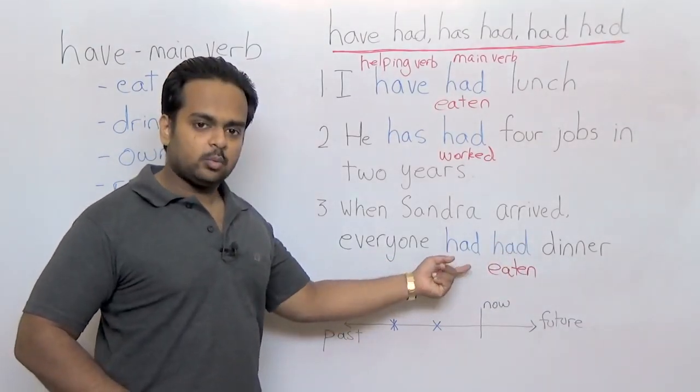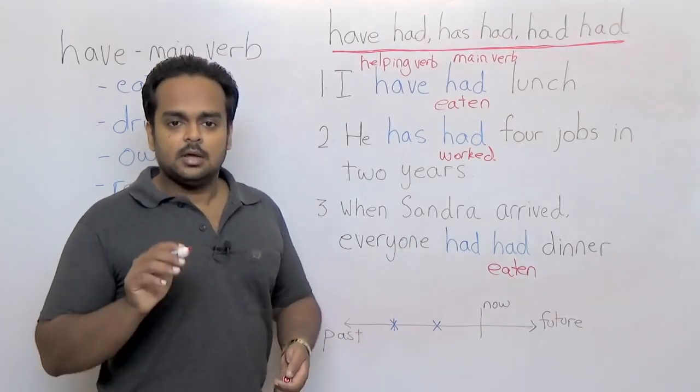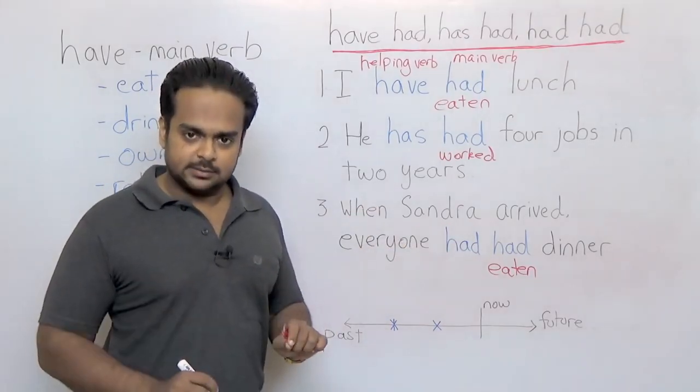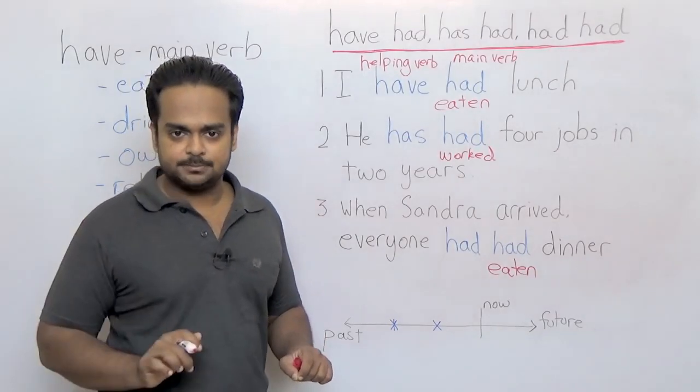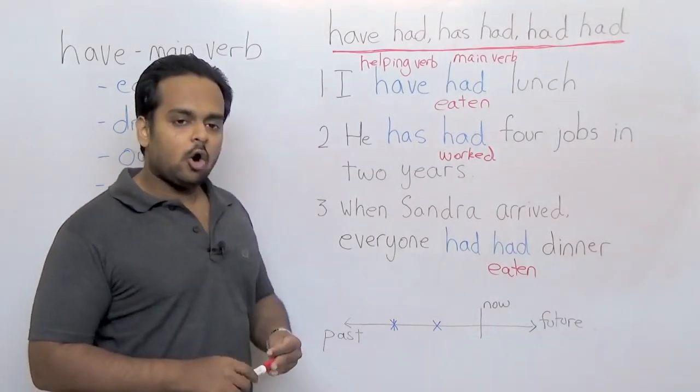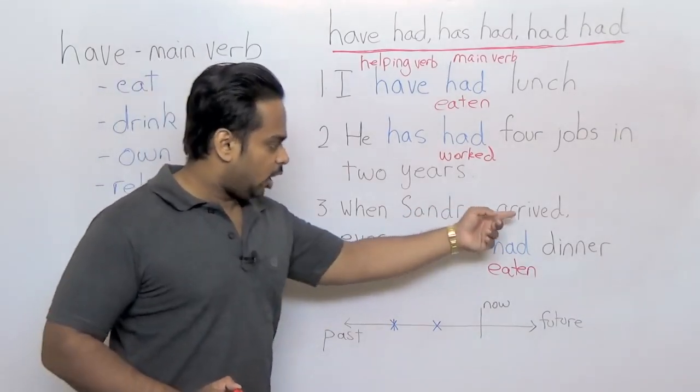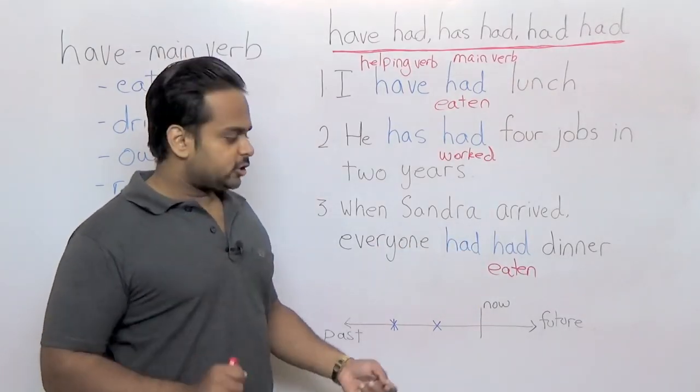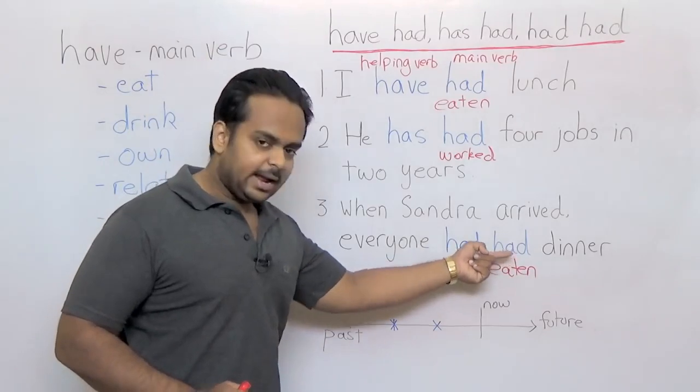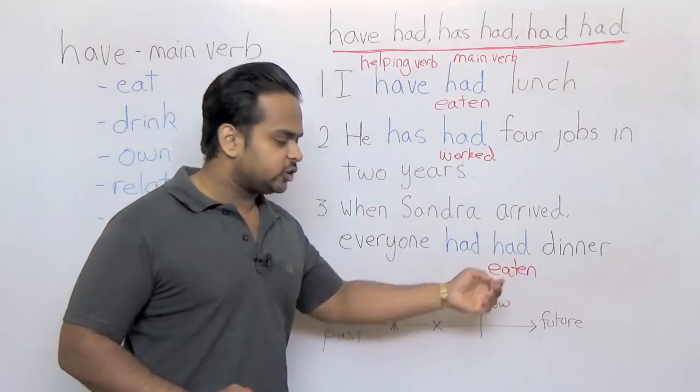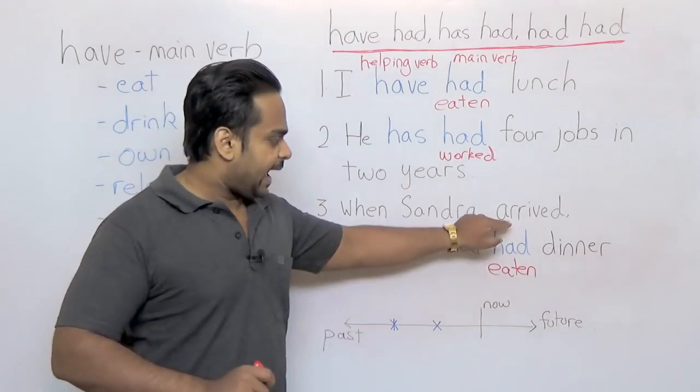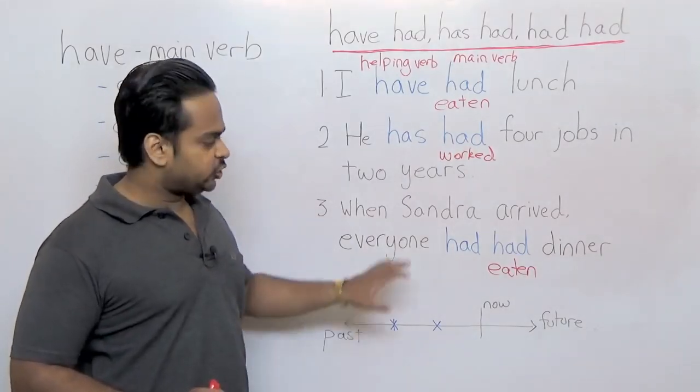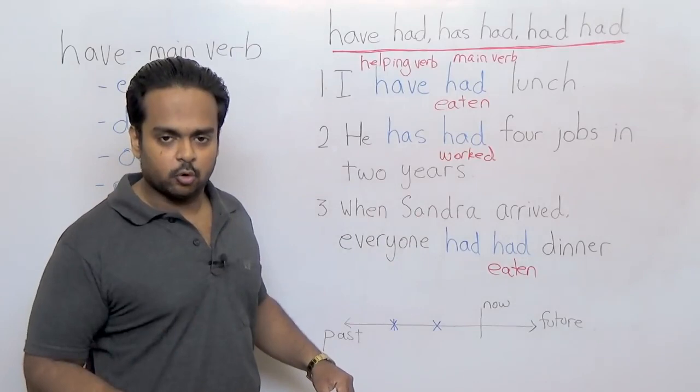But what about this had? Why are we using had over here? The reason for that is that this sentence does not have a connection with the present. It's talking completely about the past. But also notice that there are two actions in this sentence. There is arrived and there's also this had which means eaten. So when we put had before one action, it shows that this action happened first and this action happened second.